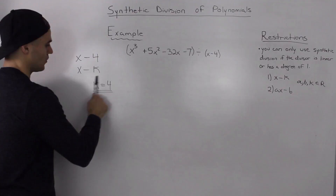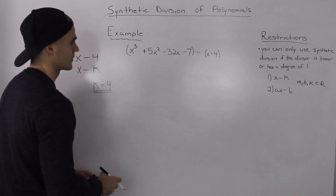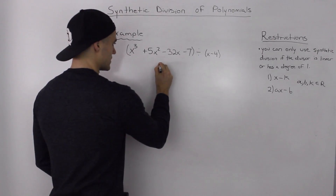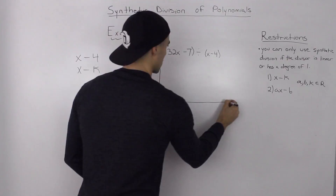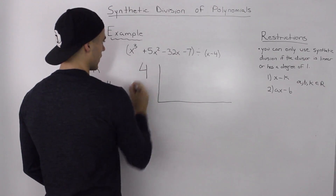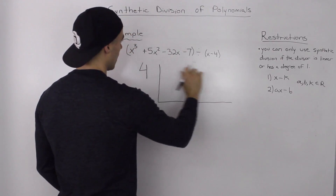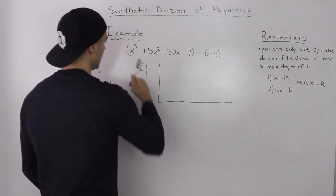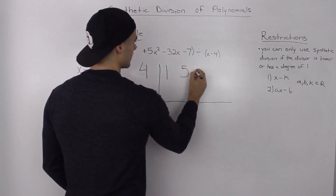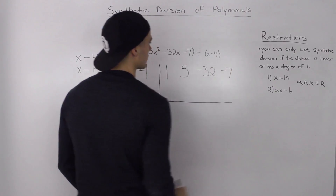The K value is 4. With synthetic division, you always have to know what your K value is. Once you find out the divisor is linear and you have your K value, you make a chart. The K value goes outside of the chart — so we write 4 up here. Then inside the chart in the top row, we write the leading coefficients of the dividend: 1, 5, negative 32, and the constant, negative 7.